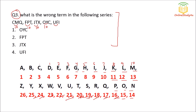Then U to F — counting from U: one, two, three, four, five, six, seven, eight, nine, ten — that gives E, not F. So U-F-I is not following the pattern; the difference here is 11, not 10. So option four is the correct answer.